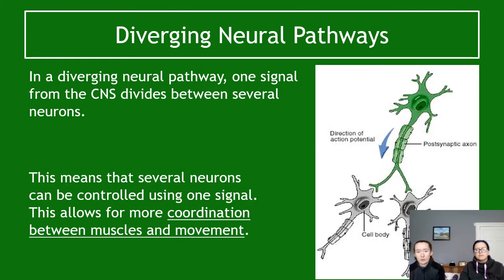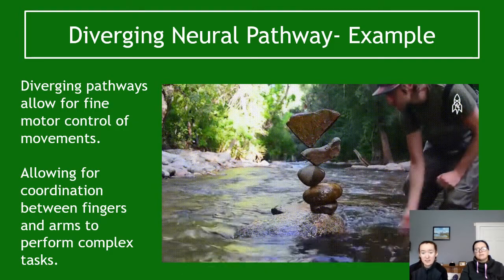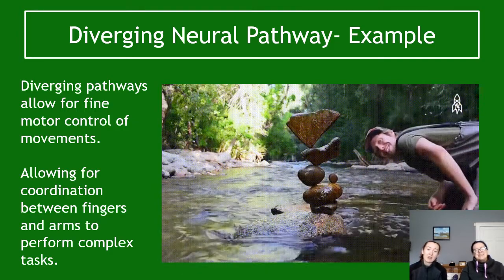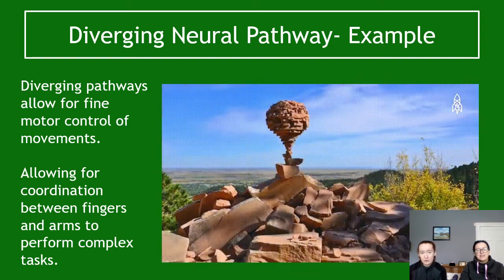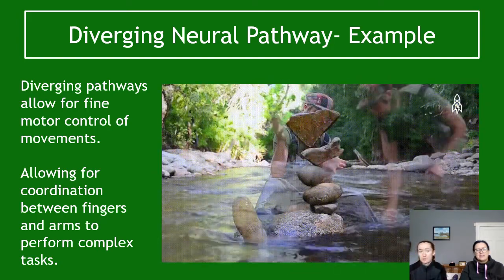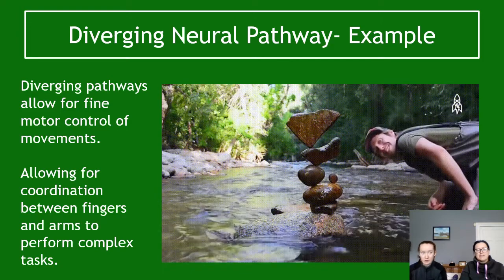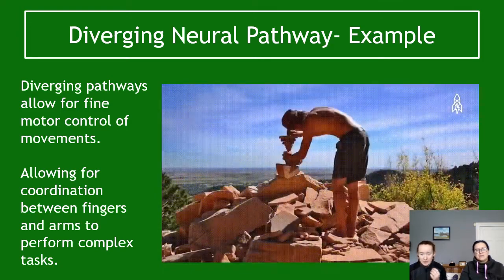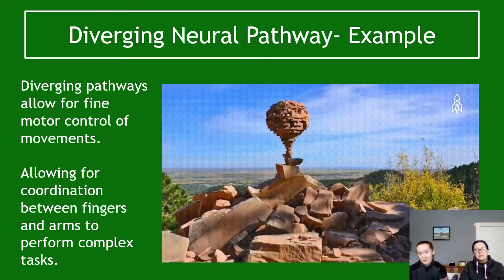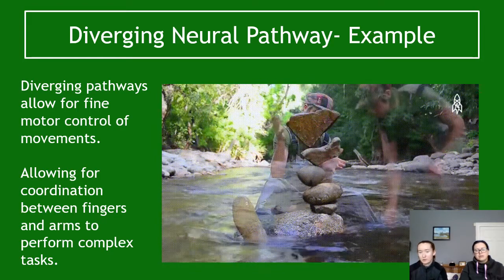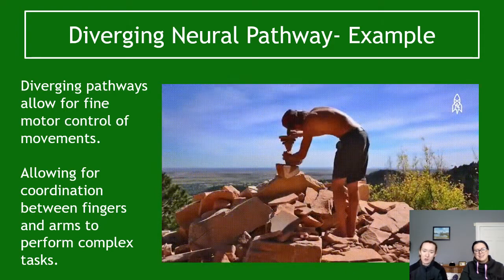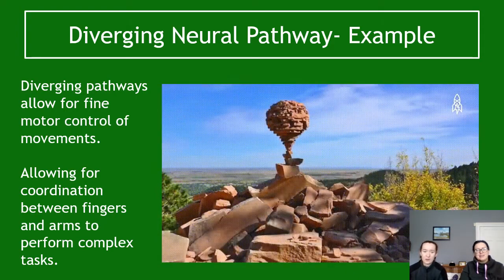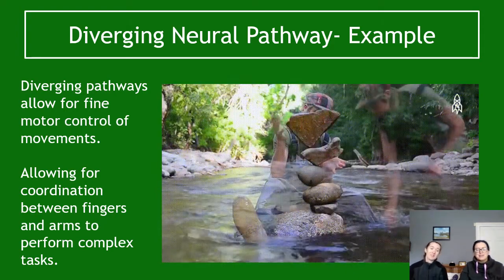An example of a diverging neural pathway — which you don't need to state in an exam — is fine motor control. Because of its link to muscles, diverging pathways give you much better control, allowing you to perform complex tasks such as balancing rocks, which requires better coordination and fine motor control within your muscles.